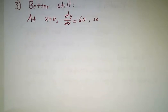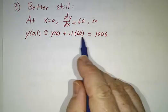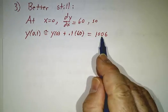If you want to do even better, you don't use two steps, you use 10 steps. We'll go in steps of a tenth. In the first tenth of a second, we increase at rate 60, and get to 1006.